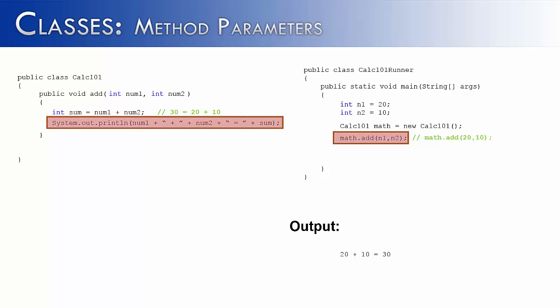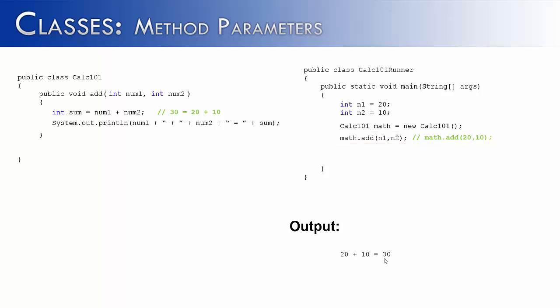Now that we have a sum, we can move on to the System.out.println method, which is going to print out the first number, a plus sign, the second number, and the sum. The output would look something like this: 20 + 10 = 30. The add method would then be done, we'd go back to the main method, the call would be complete, and so we see how formal and actual parameters connect.